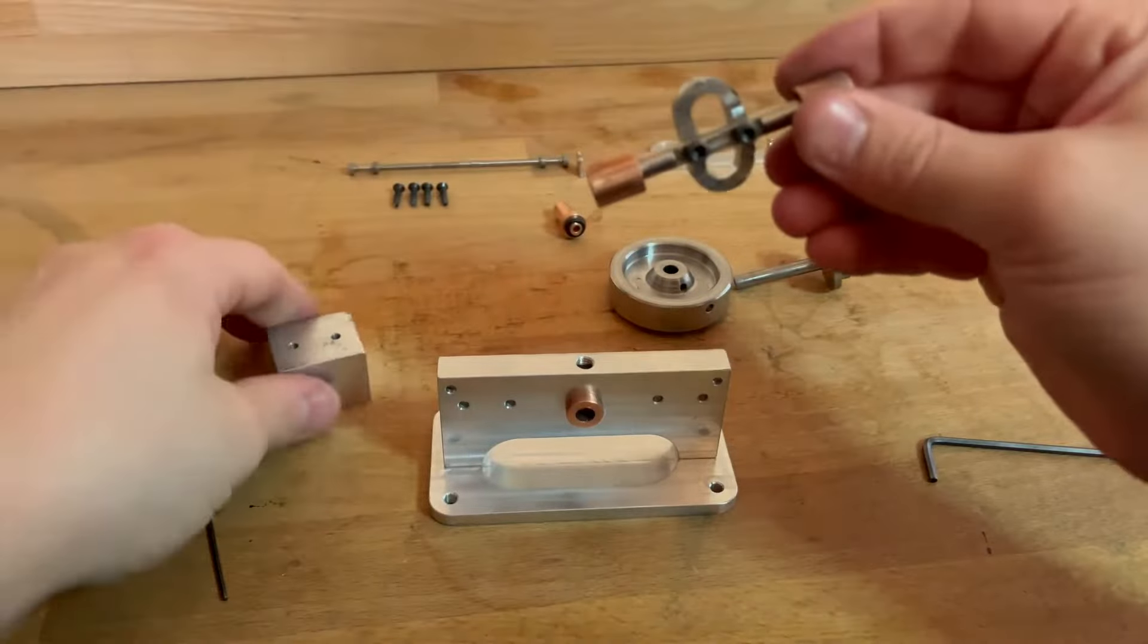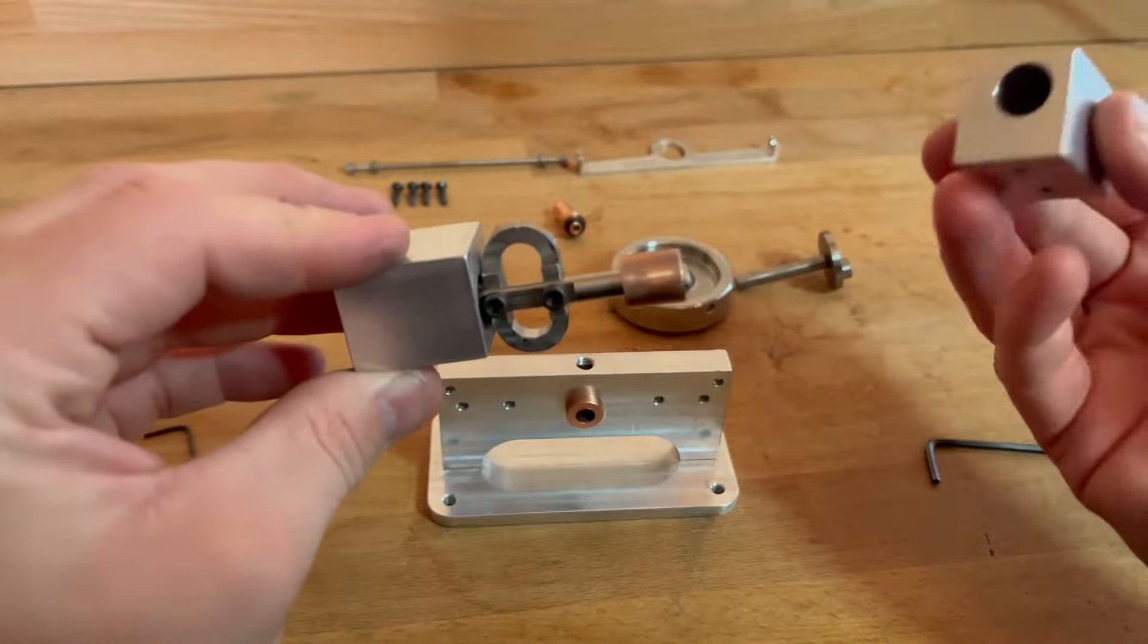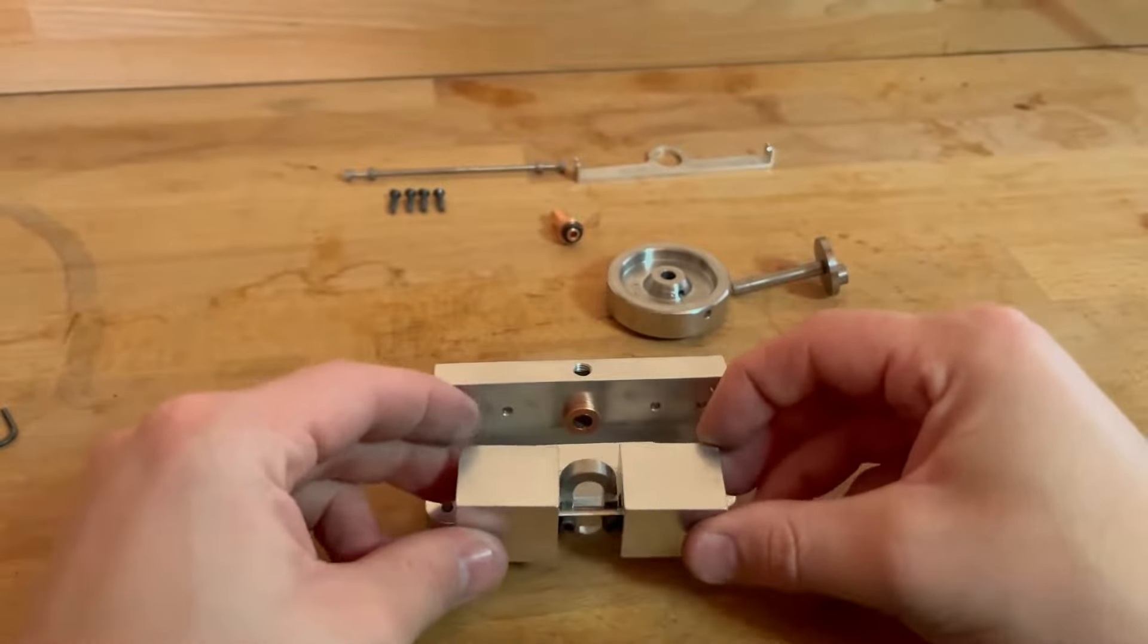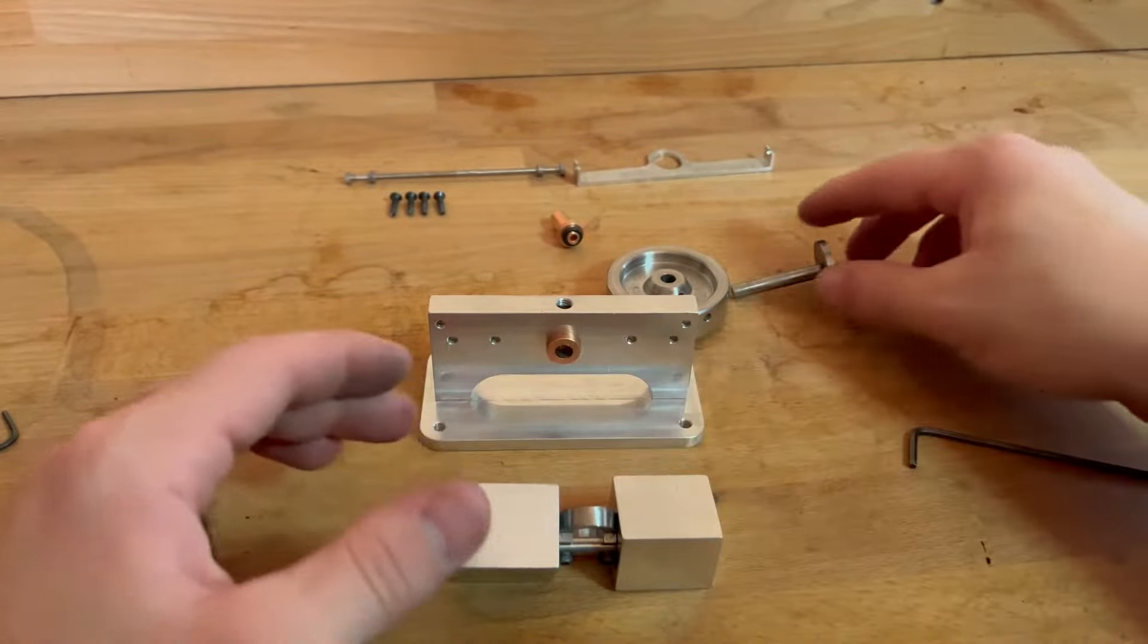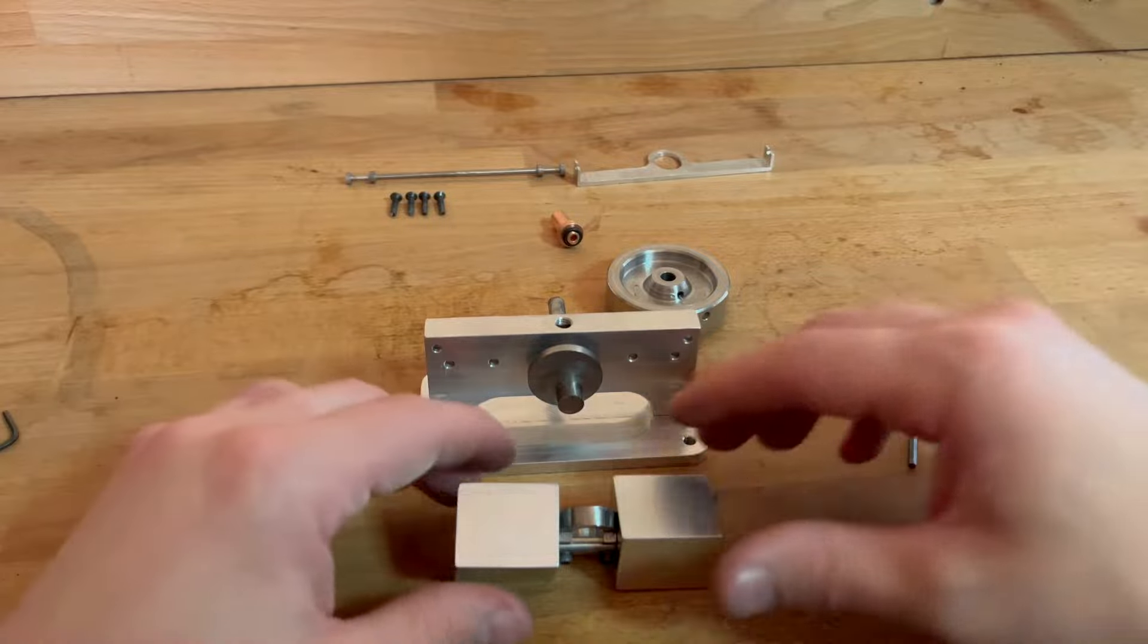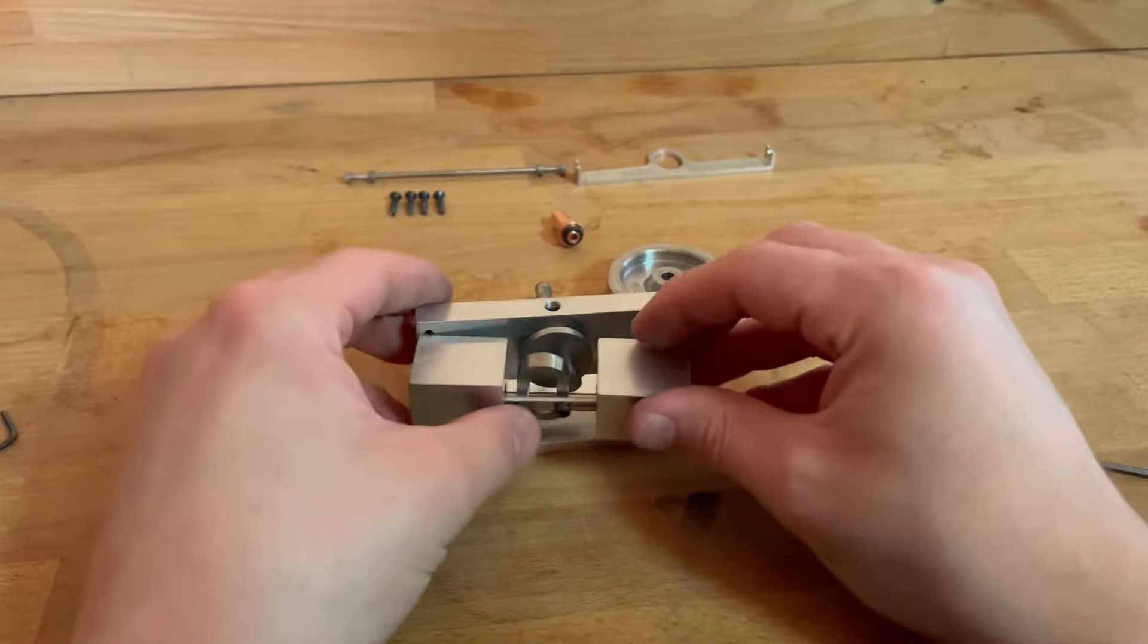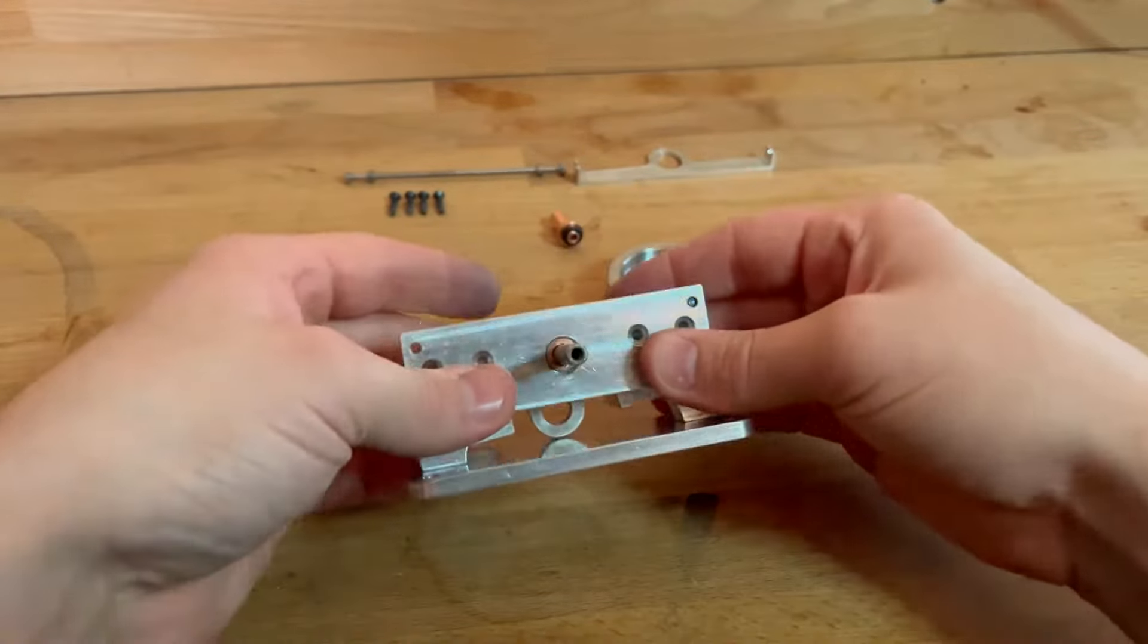So then this will assemble into here, and then the other cylinder head will go in here as well, like so. But first of all, what we'll do, we'll put the crank and the connecting rod through, and then this will then assemble onto here like so. Then we turn it around.